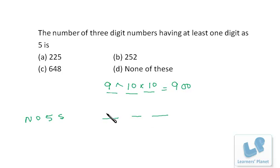So for the first place, I have in all 10 choices, but zero and five cannot come. So I have eight choices. For the second place, I have 10 choices, but five cannot come. So I have nine choices. For the third place, I have 10 choices, but five cannot come. So I have nine choices. So it's 9×9×8. That is 81×8. So it's 648.